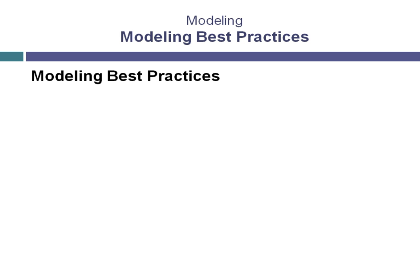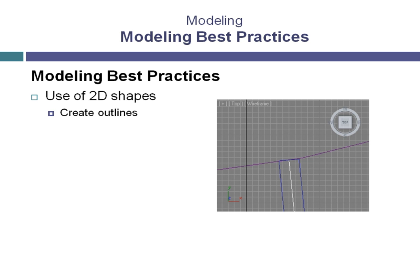Some of the best practices covered in this chapter relate to the use of 2D shapes. Two-dimensional shapes are used in 3ds Max for a variety of purposes that include modeling, texturing, and animation. When working with two-dimensional shapes, one way to use them as efficiently as possible is to use a single spline in order to create an outline object. This simplifies drawing a complete outline by allowing you to offset a single spline and create a complete closed spline object.